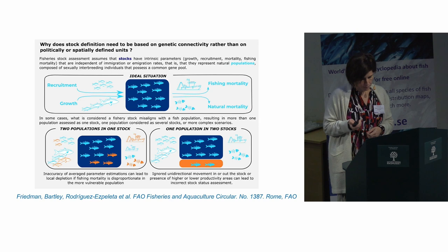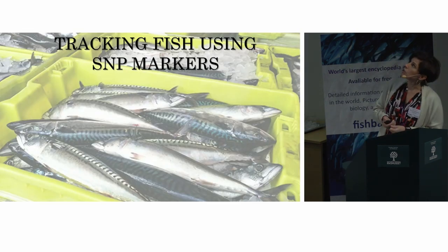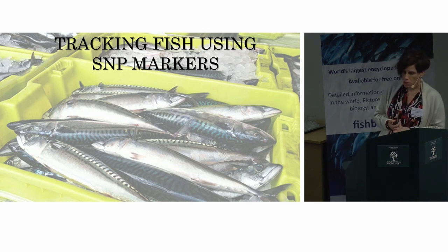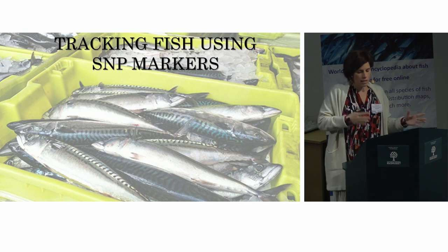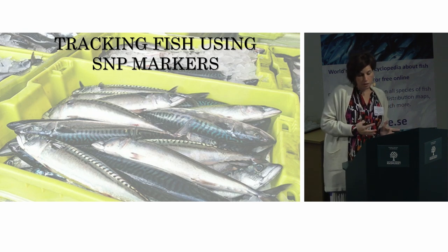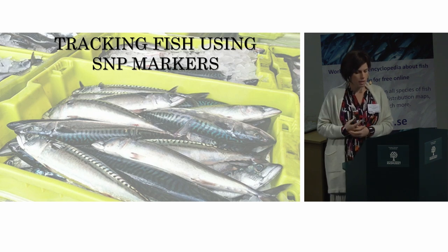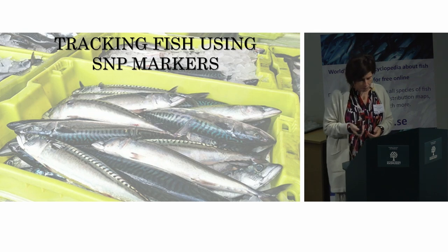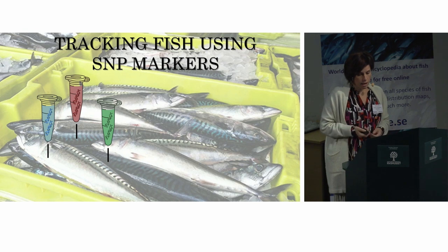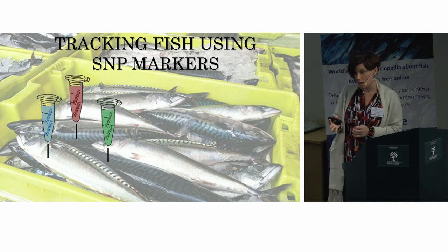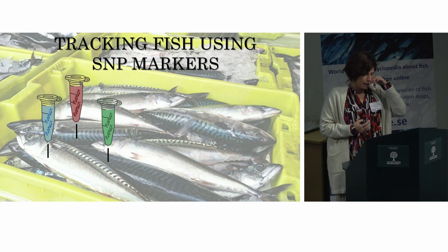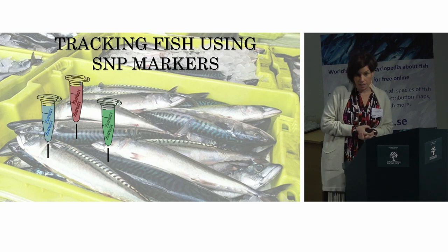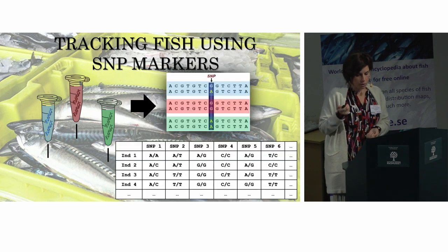The conclusion is that it's very important to know the connectivity of different populations so we can define stocks properly to match actual natural populations. I'm dividing this presentation into two parts: one is tracking fish using SNP markers — DNA-based — and the other uses environmental DNA. In the SNP approach, we collect tissue samples, extract DNA, and perform genotyping.